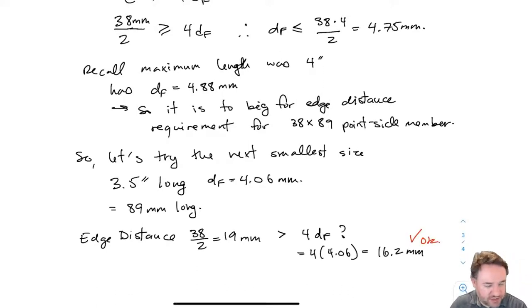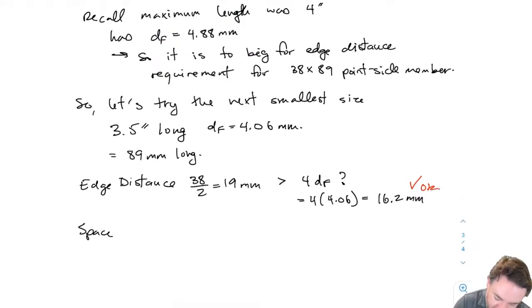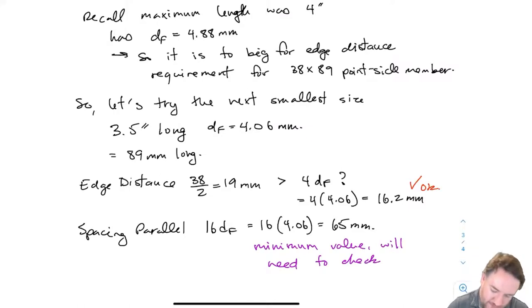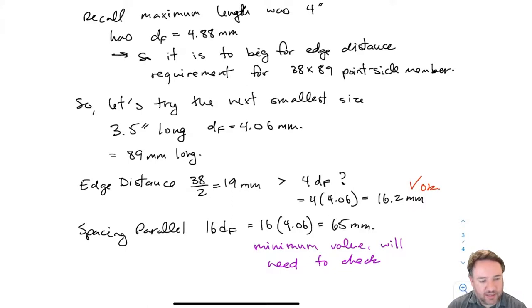Now we check all our requirements. Edge distance: actual edge distance is half the width of the wood = 19mm, and the requirement is ≥ 4DF = 16.2mm for our 3.5-inch nail. Edge distance is fine. For spacing parallel to grain, the minimum spacing is 16DF = 65mm. This gives us a minimum value — our final spacing from the strength calculation just needs to be larger than 65mm.